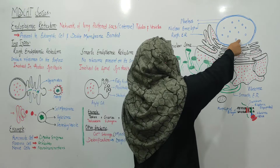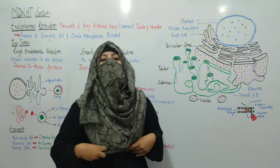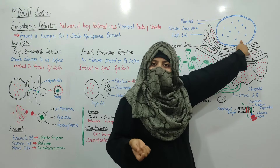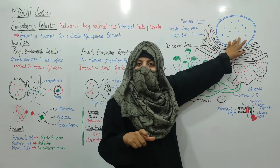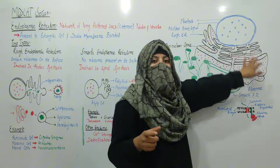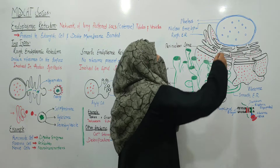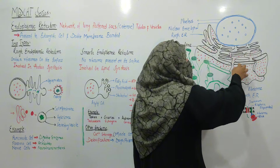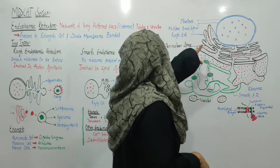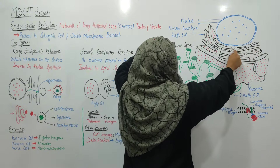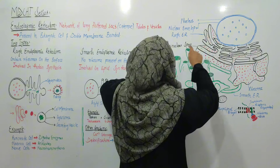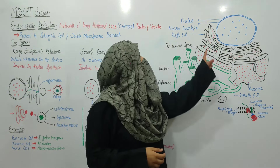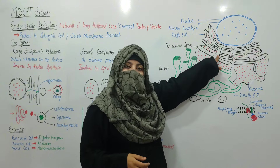Let's define the structure. In the cell you have the nucleus. The nucleus is covered with a double membrane, and there are small pores called nuclear pores. One membrane covers completely, but the other membrane is extended outward forming channels. Between these membranes there is a space called the perinuclear space. These channels extend from the nuclear membrane.